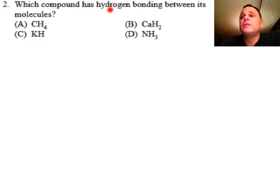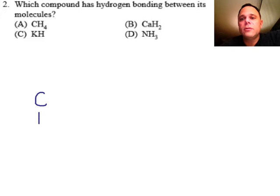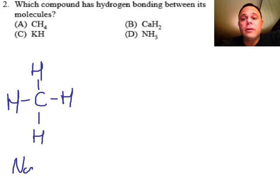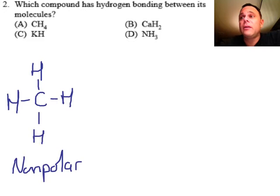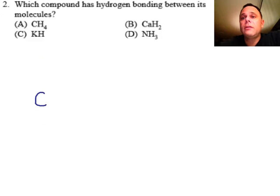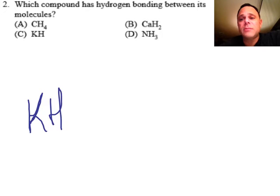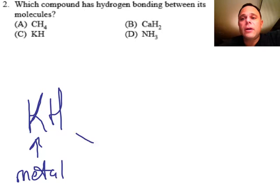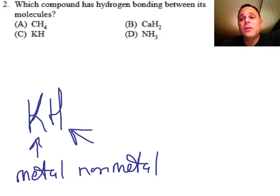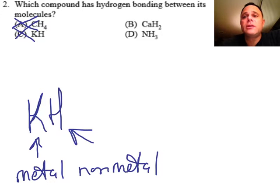Question two: which compound has hydrogen bonding between its molecules? We'll examine CH4 first. CH4 is symmetrical, so it is nonpolar and will not interact with neighboring molecules. Next, KH — potassium hydroxide. Potassium is a metal and hydrogen is a nonmetal, so we have an ionic bond, which does not translate into hydrogen bonding. So choices A and C are out of the question.